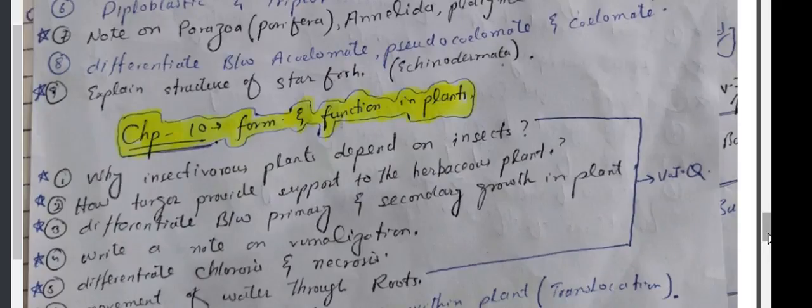Chapter 10. Why do insectivorous plants depend on insects? How does turgor provide support to the herbaceous plants? Differentiate between primary and secondary growth in plants. Write a note on.